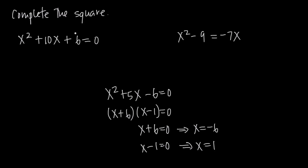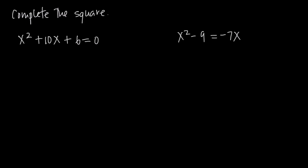But what happens when we need to find the roots but can't factor the trinomial? If we look at x squared plus 10x plus 6, there are no factors of 6 that give us 10. The factors of 6 are 6 and 1, or 2 and 3 — no combination gets us to 10. So how do we find the roots? One method is called completing the square.